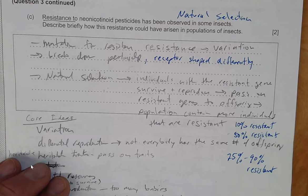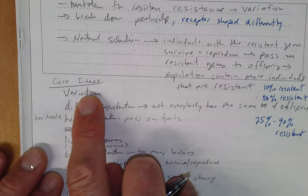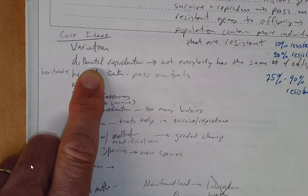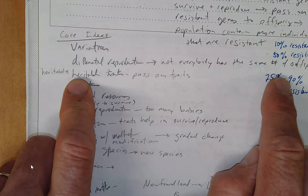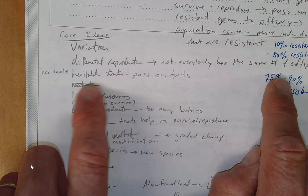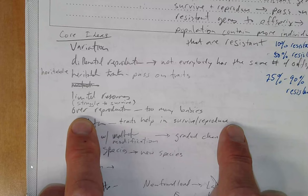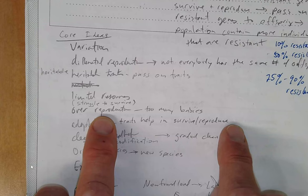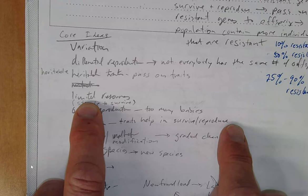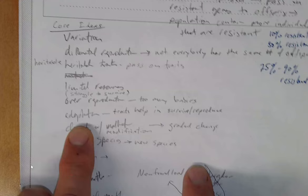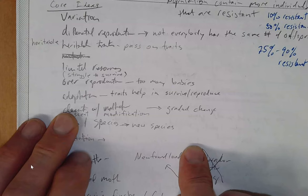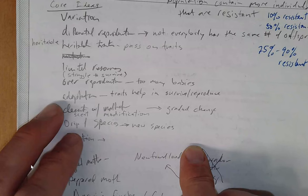Since we're on natural selection, think about these core ideas: there's variation, differential reproduction meaning not everybody has the same number of offspring. Traits are heritable—if you couldn't pass on these genes and these traits then natural selection wouldn't occur. Resources are limited so not everybody survives, so only the ones that are best adapted tend to survive, reproduce, pass on their genes. Too many babies—they have to struggle for those resources because you have too many mouths to feed. Adaptations—traits, the physical characteristics we see—help survival. Descent with modification: gradual change over time.